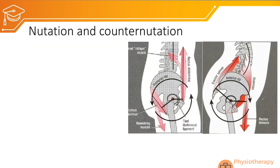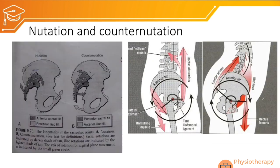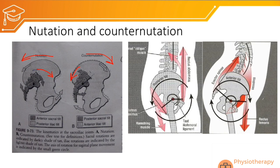Nutation and counter-nutation of the sacrum relate to pelvic bone movement. When there is posterior pelvic tilt, there is anterior tilt of the sacrum — called nutation. When there is anterior pelvic tilt, there is posterior tilt of the sacrum — called counter-nutation. This is a very minimal movement of approximately 1–2 mm of translatory and 0–4 degrees of rotatory movement. During weight-bearing, nutation compresses and stabilizes the SI joint; during sitting (non-weight-bearing), counter-nutation makes the SI joint less stable, shifting load to the lumbar column.